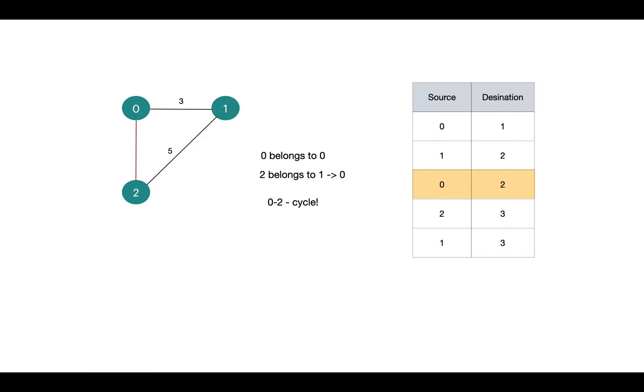The second operation is union. If the elements are not in the same subset, we join them by taking union. Like here, elements 2 and 3 belong to different subsets, so we take union by making one of these vertices as parent of the other vertex.